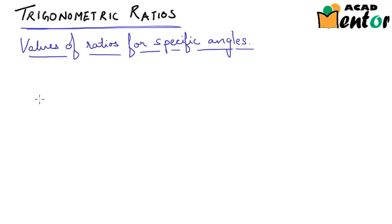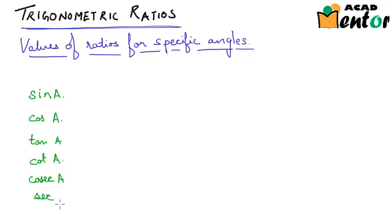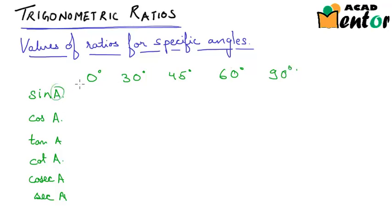The ratios we spoke about were sine of angle A, cos of angle A, tangent of angle A, cot of angle A, cosec of angle A, and sec of angle A. We will see the values of these ratios for specific angles: 0 degrees, 30 degrees, 45 degrees, 60 degrees, and 90 degrees. We will try to fill up this table — finding sine 0°, sine 30°, sine 45°, and similarly for cot, cosec, and other ratios as well.